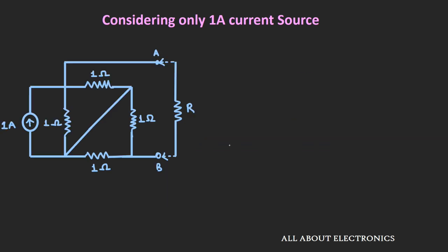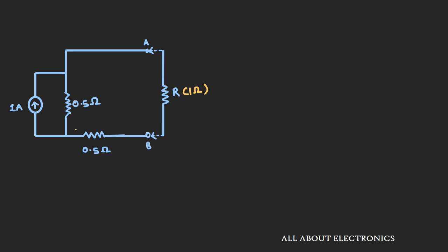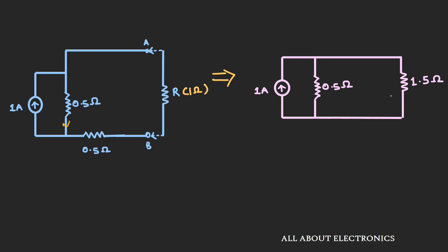We can redraw this circuit. Since the two 1-ohm resistors are in parallel, we replace them with an equivalent parallel resistance of 0.5 ohm. Similarly, the equivalent parallel resistance of the other two 1-ohm resistors is also 0.5 ohm. Now the 1A current divides: some flows through the 0.5-ohm resistor and the remainder through the series combination of the 0.5-ohm and 1-ohm resistor.